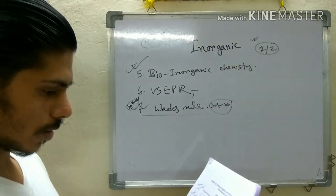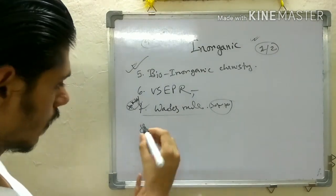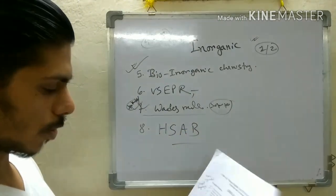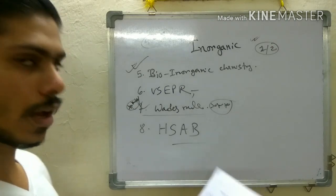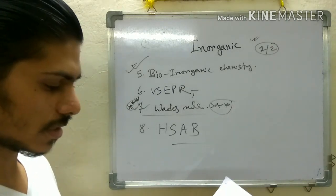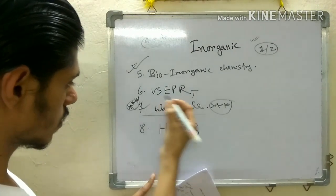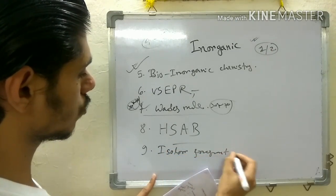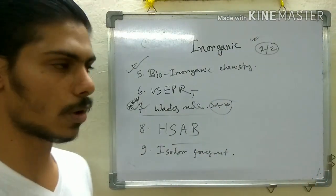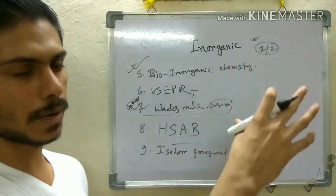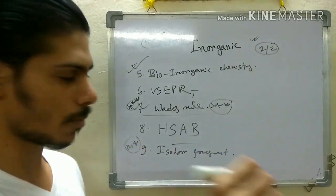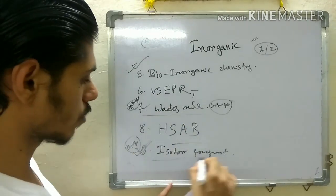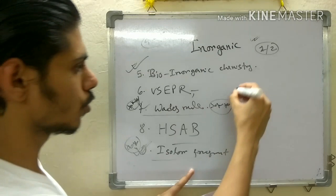Hard-soft acid-base (HSAB) theory is an important topic, along with other concepts of acid-base theory such as the Lux-Flood concept and Brønsted-Lowry acidity. Another frequently asked topic is isolobal fragments — they will give you a molecule or fragment and you have to identify which is isolobal with it. I will make a video on this. It was also asked in the last NET exam, so it is a must-read topic.